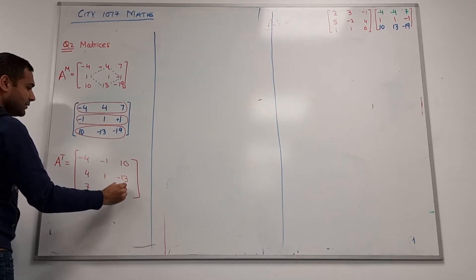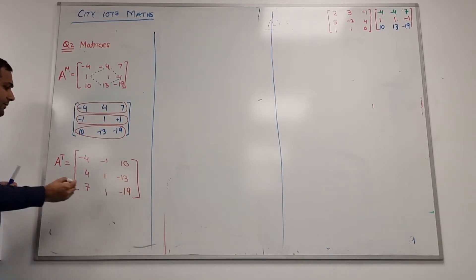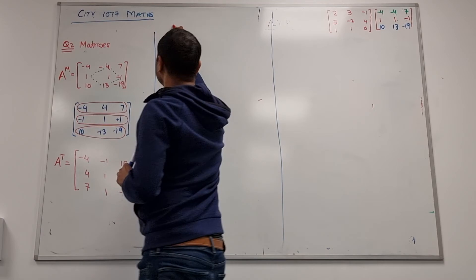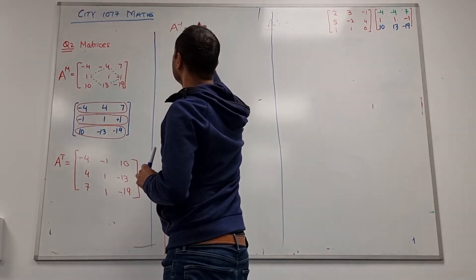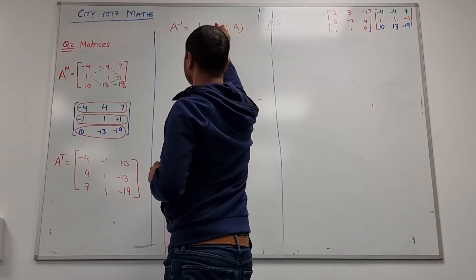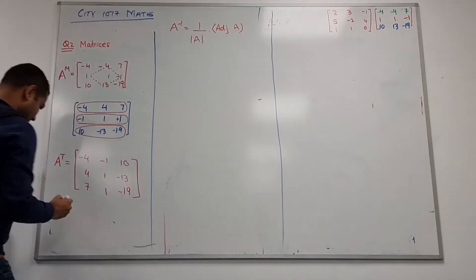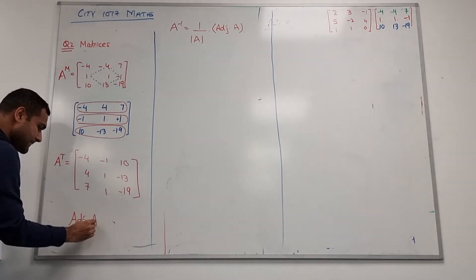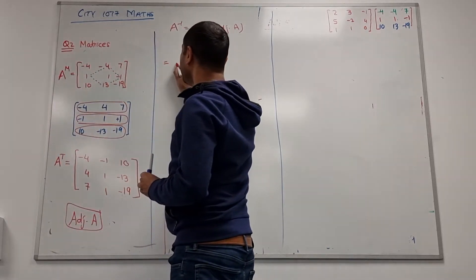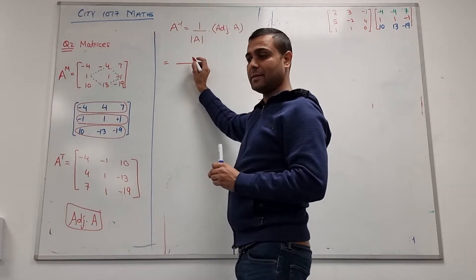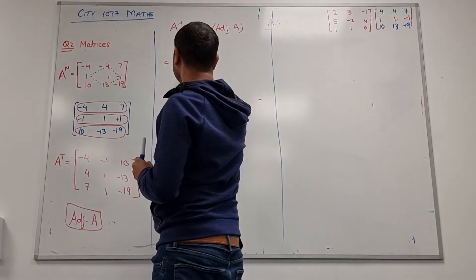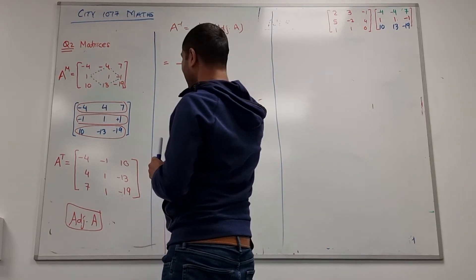Now if you remember the formula, the formula for the A inverse was A inverse equals 1 over A determinant and then we have this thing. So what was A determinant? We have the value for the determinant minus 3. So I just put 1 over minus 3 here.